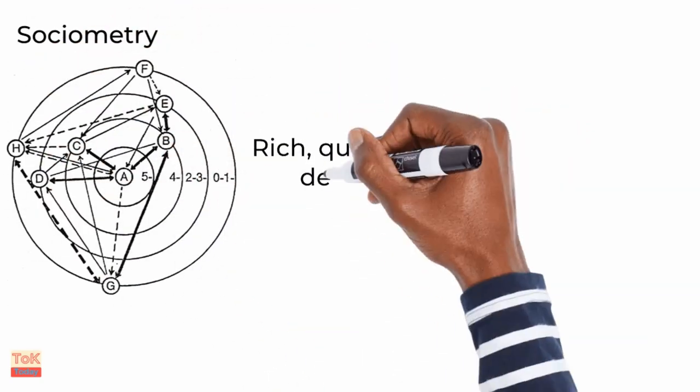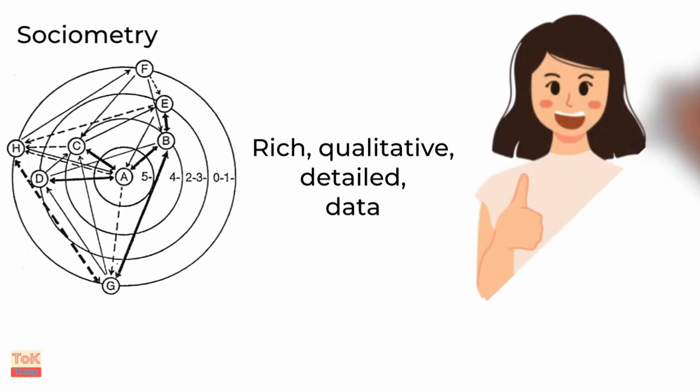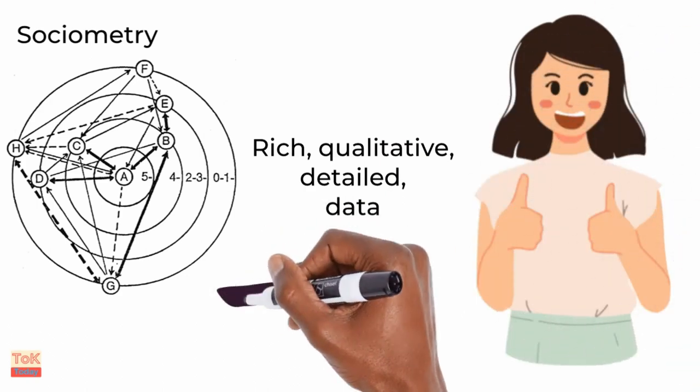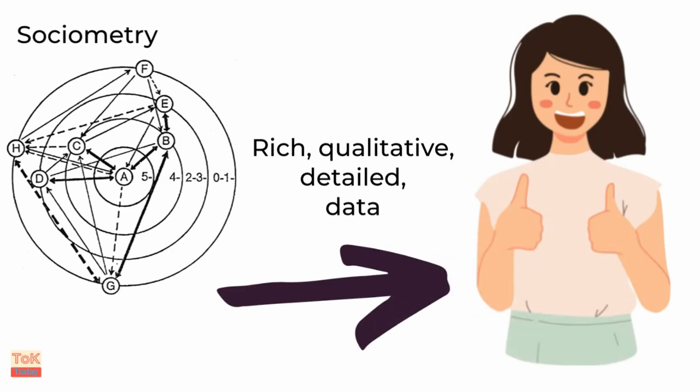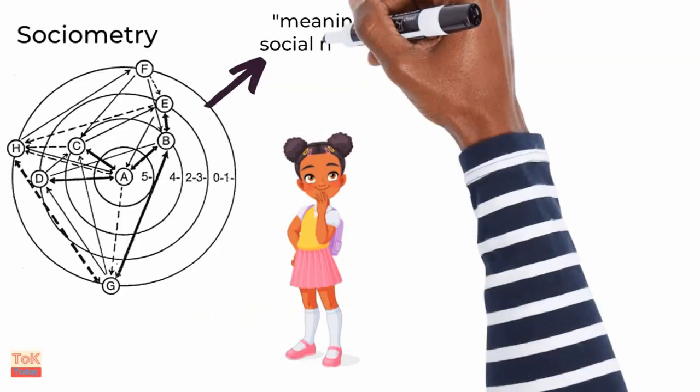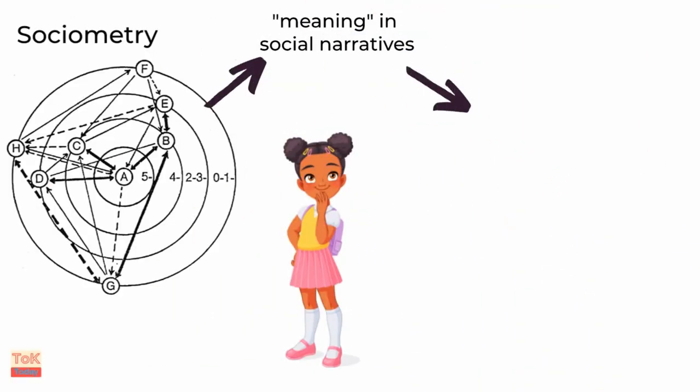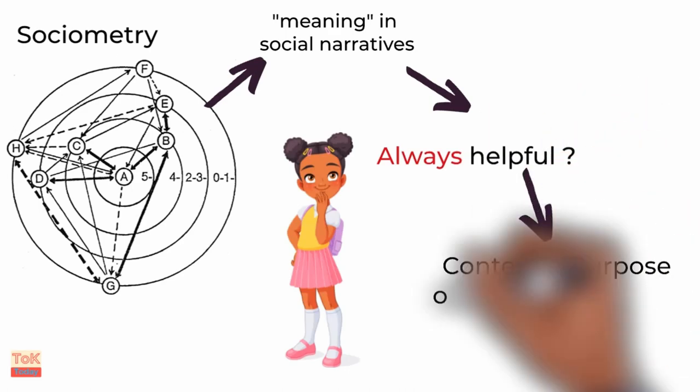Sociometry is a super clever way of representing rich, qualitative, detailed content in a quick and accessible way. This is typically used in sociology, psychology, anthropology and human geography. It's really hard to depict patterns or trends in qualitative data in a compact and succinct manner. Sociometry allows us to do that. It allows us to communicate meaning in social narratives.